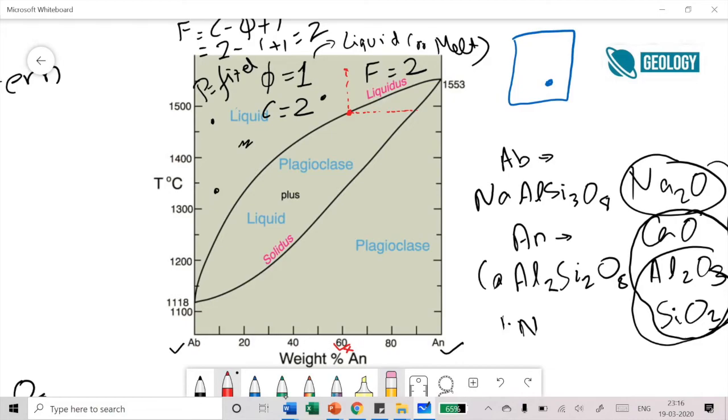This horizontal line where it intersects the solidus curve is going to provide the composition of my solid. The composition of this solid over here is almost 90 percent anorthite. You are starting with a liquid which is 60 percent anorthite and now you are getting a first solid crystal which is 90 percent anorthite. This is your first solid.